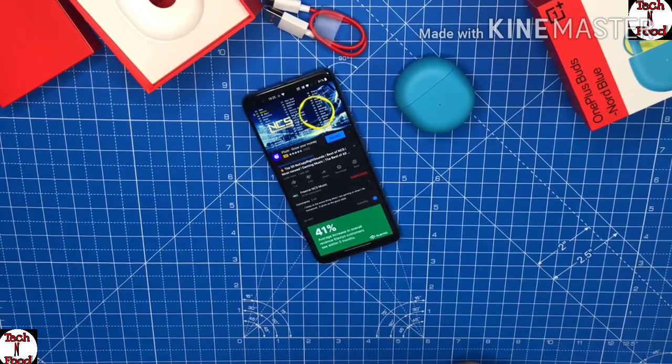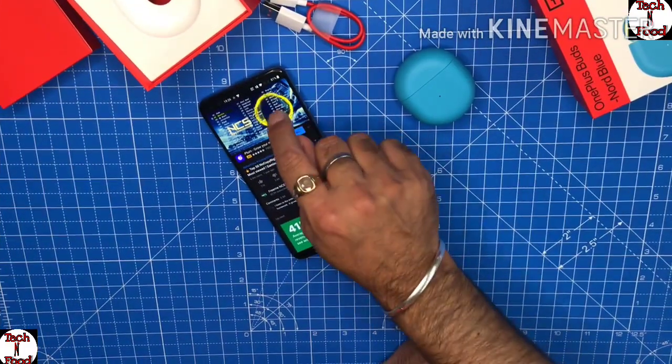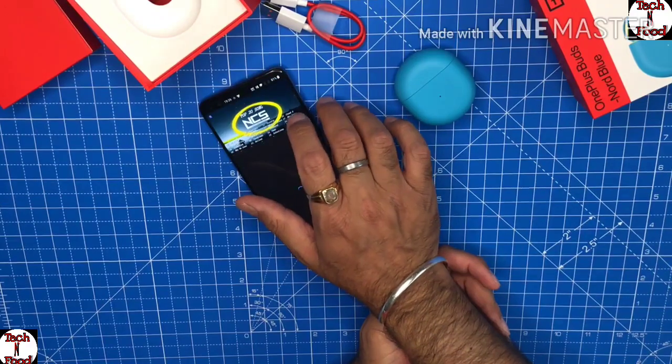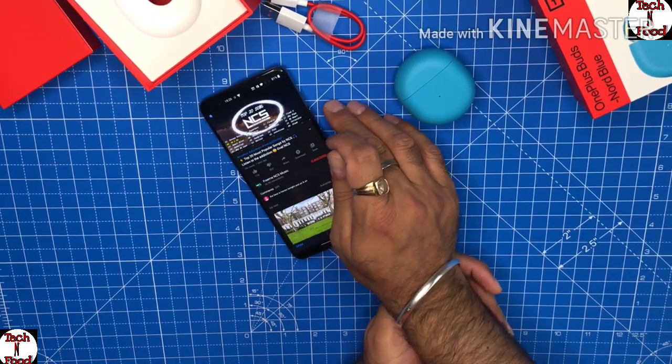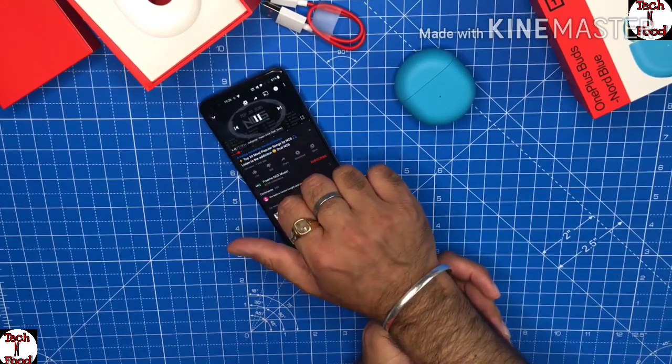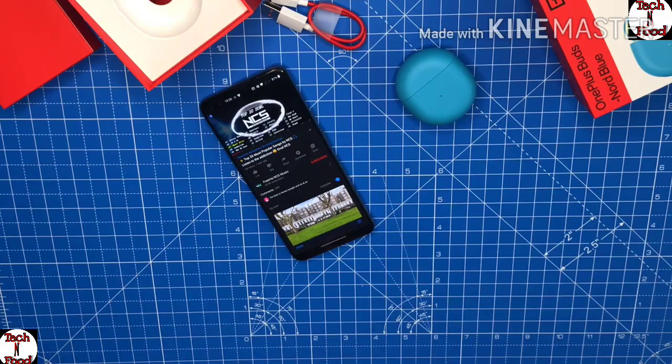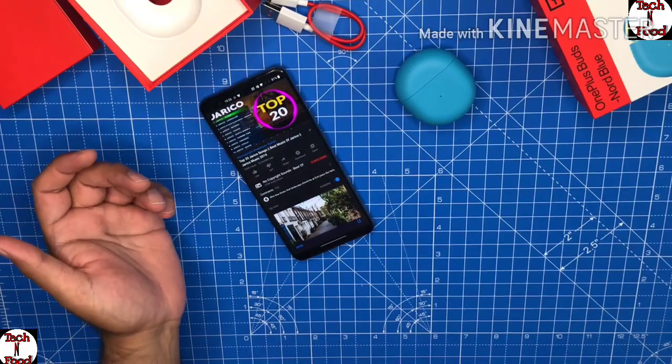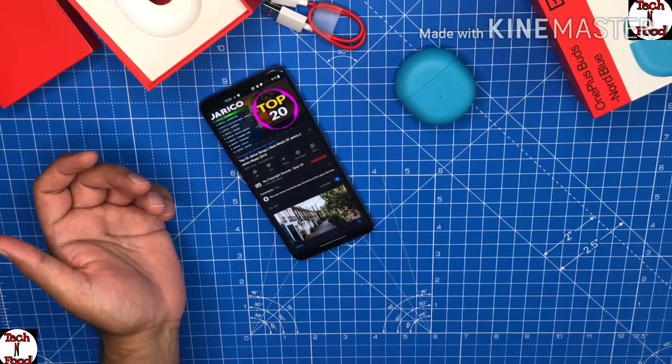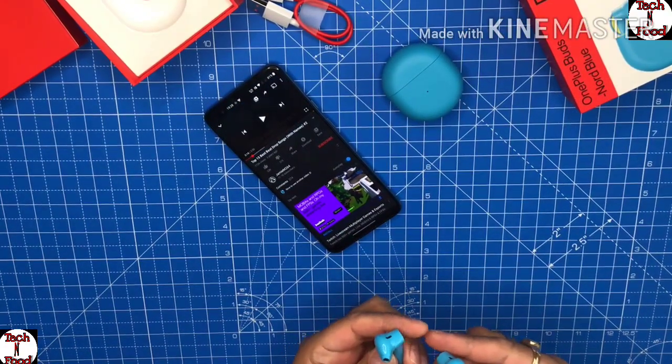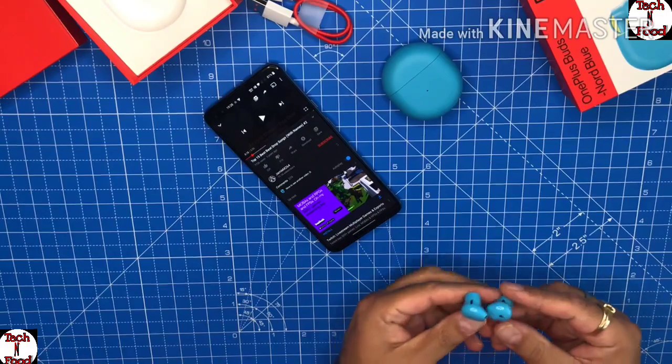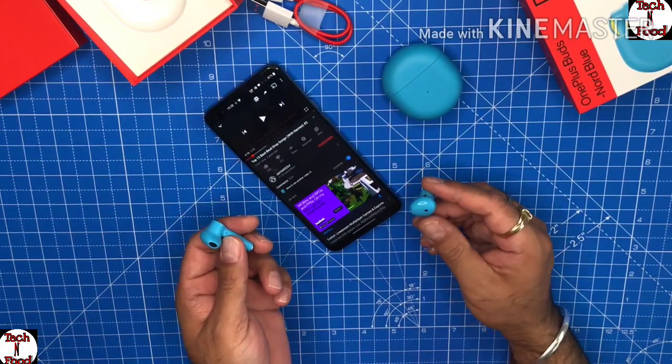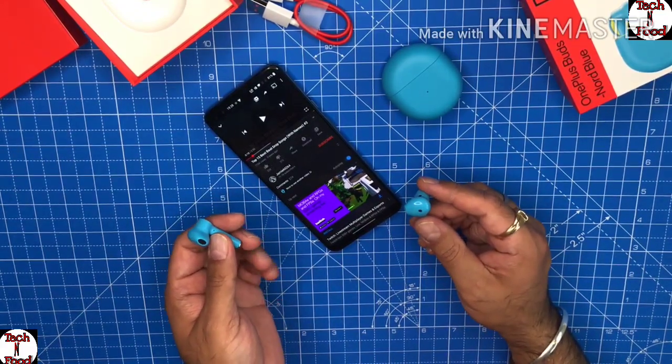I put the volume up. They don't have noise cancellation for sure. Okay, I'm not really satisfied. Let's change the track. If you do a double tap on the right bud, it changes to the next track. At full volume, yes, the sound quality is okay but nothing amazing, nothing to shout about.